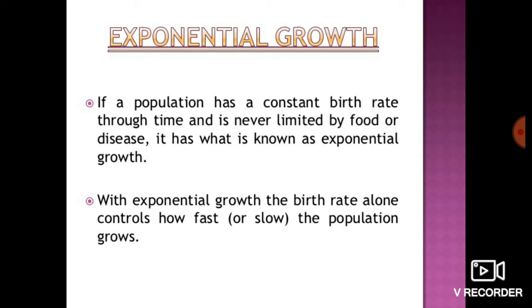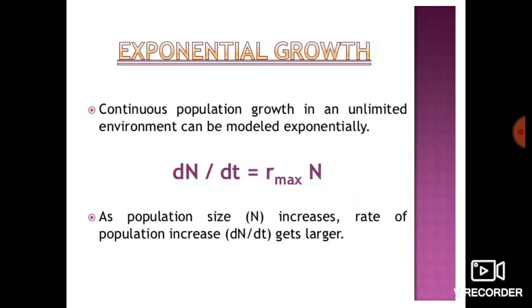If a population has a constant birth rate through time and is never limited by food or disease, it exhibits exponential growth. An example is bacteria, whose population can increase in the same place with constant power. With exponential growth, the birth rate alone controls how fast the population grows — for example, 1 to 2, 2 to 4, 4 to 8. The formula is dn/dt = rN, where dn/dt is the rate of change of population number.